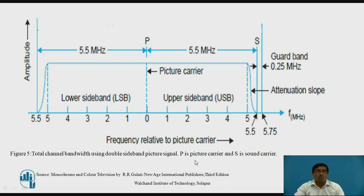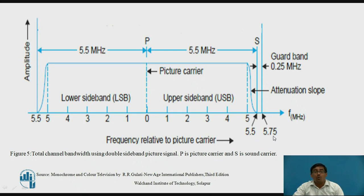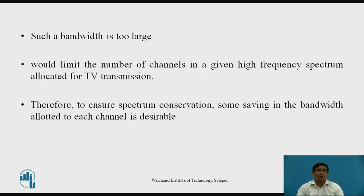This diagram shows the total channel bandwidth using a double sideband picture signal. The graph is drawn amplitude versus frequency relative to the picture carrier. P indicates the picture carrier and S indicates the sound carrier. The upper sideband (USB) runs from 0 to 5.5, and the lower sideband from 0 to 5.5, totalling 11 MHz, with a guard band of 0.25 MHz from 5.5 to 5.75. However, such a bandwidth is too large, as it limits the number of channels available in the allocated spectrum. Therefore, to ensure spectrum conservation, some saving in bandwidth allotted to each channel is desirable.